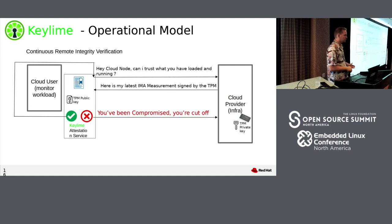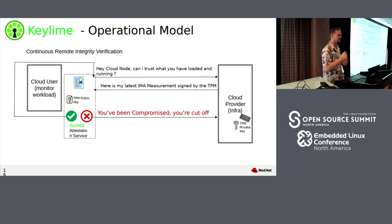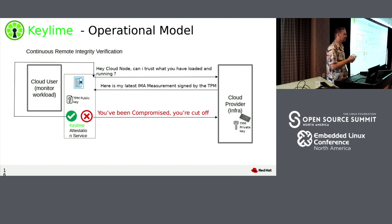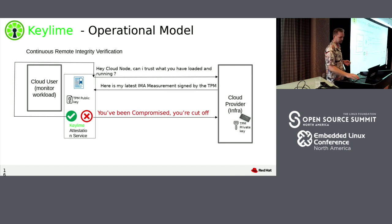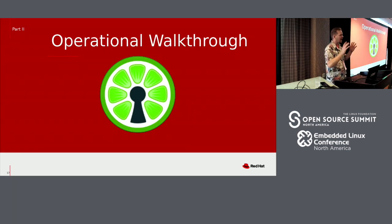With continuous file attestation and continuous runtime attestation, it's a constant ask — you're always asking, 'Can I still trust you?' The TPM agent keeps reporting back with its signed logs. It's not really saying yes; it's saying, 'Here are my signed logs — you tell me if you can trust me, and do what you need to based on that decision.'